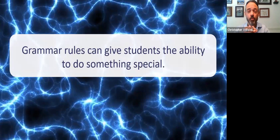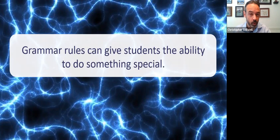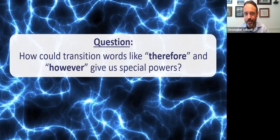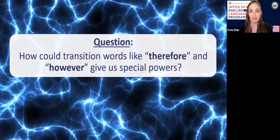Grammar rules can give students the ability to do something special — when we learn a new language, we get new abilities to do things. So here's the question: how could transition words like 'therefore' and 'however' give us special powers, maybe superpowers? I think a lot of us have never thought about words like 'therefore' and 'however' giving us special powers. So try to be creative — how could these transition words give us special powers? They help for communication, from Raleigh. They could help us contrast good and bad skills. Hold your reader spellbound — nice word, Denise. It helps critical thinking — definitely a superpower. And it makes the story more interesting and powerful, from Susana. I would agree — these words really do make stories interesting and more powerful.